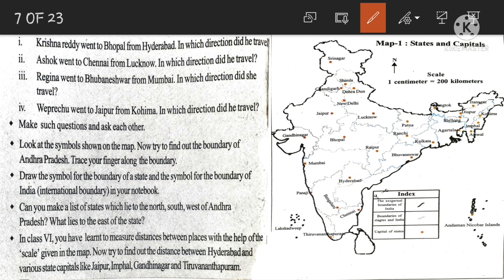Next question: Ashok went to Chennai from Lucknow — in which direction did he travel? Lucknow is the capital city of Uttar Pradesh and Chennai is the capital city of Tamil Nadu. He travelled towards the bottom of the map, so it is South direction. Ashok travelled towards South.